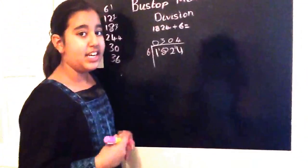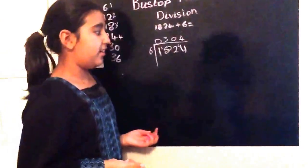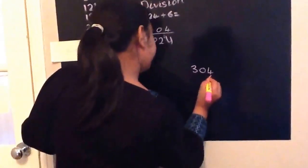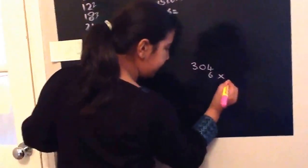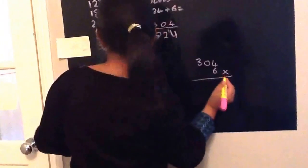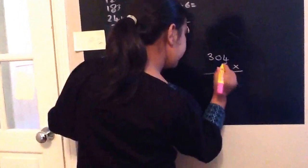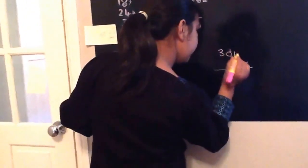So, if you want to be really sure with your answer, to check it, you can write three hundred and four times six. We're going to times that. So four times six is twenty-four. So we're going to put the four here and carry the two over here.